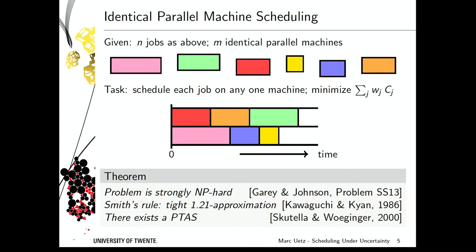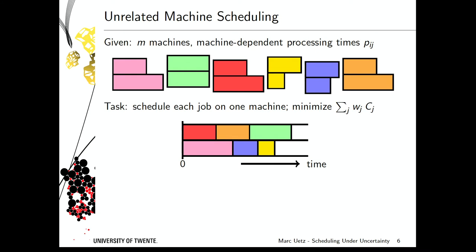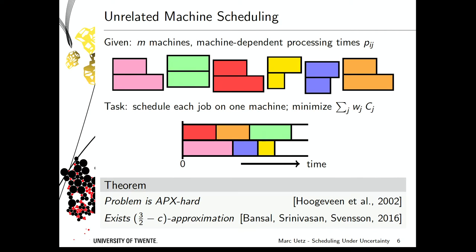Now assume the machines are no longer identical: processing times of jobs can depend on the machine they are processed on. For instance, the red job might be quicker on the first machine but longer on the second, with no dependence whatsoever between jobs. This problem is more challenging — there is no approximation scheme, it is APX-hard. Until about a year ago, a 3/2-approximation was the best known, but since then we know you can go below 3/2 by a remarkable result of Nikhil, Ola, and Aravind.